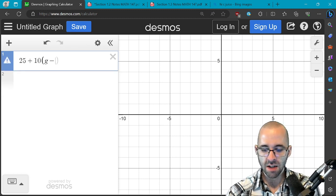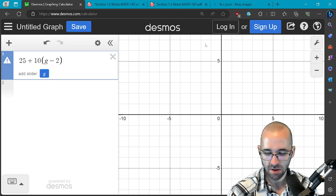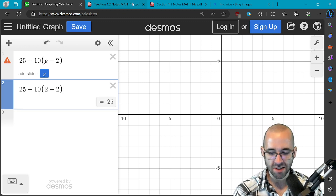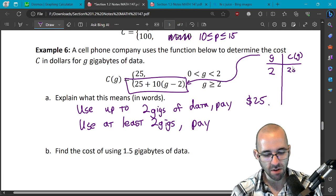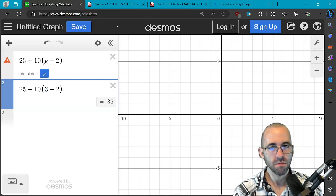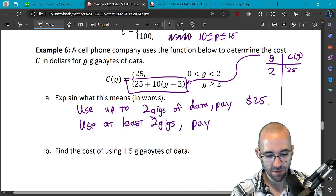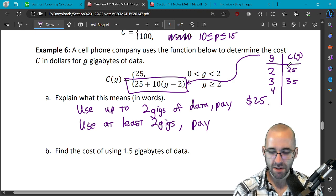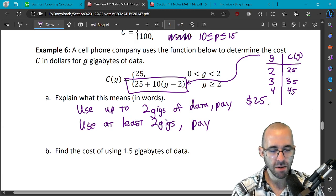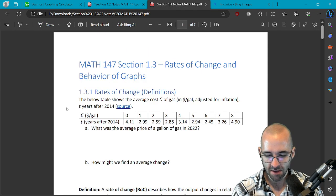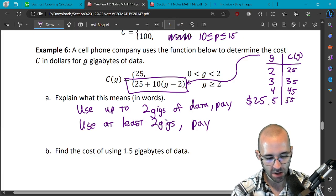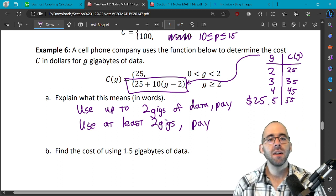So if we use 2 gigs of data, that's just plugging in 2 here. It says we're going to spend, our cost is still going to be 25 bucks. Let's write that down. What happens if we spend 3 gigs? Well let's just replace the g with a 3. 35 bucks. If we use 4 gigs of data, let's keep going until we figure out the pattern. 45. Seeing the pattern yet? 5 gigs, it's going to be 55.